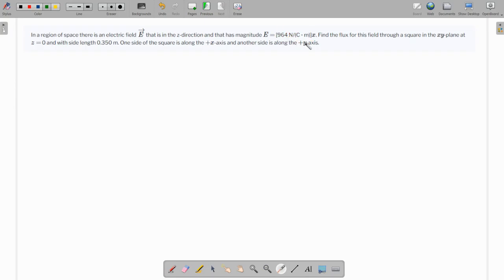So that's 964X. Find the flux for this field through a square in the XY plane at Z equal to 0. It's in the XY plane with a side length of 0.35 meters and one side of the square is along the X axis and another side is along the Y axis.